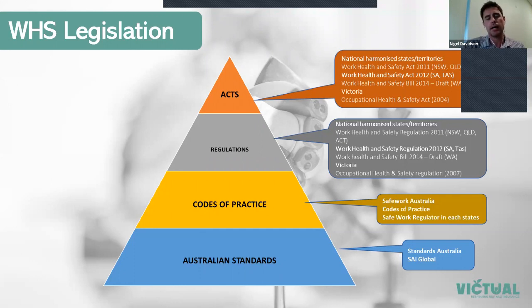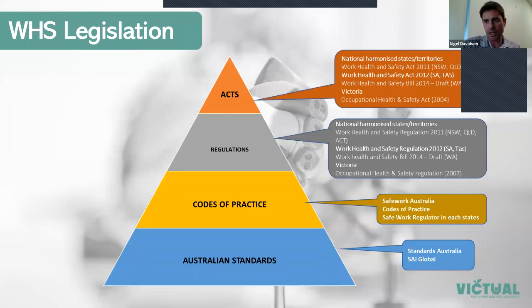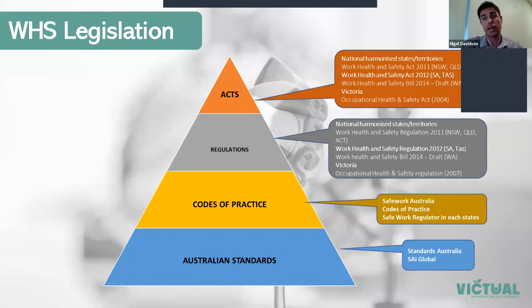Then you have Australian Standards, which are more technical documents — engineers will be well-versed in these — which can also help inform decisions around managing risk. To access these regulations, you can get them on the Safe Work Australia website, which is the government body that produces these documents. They're enforced by the different state regulators, who also put out information and work with industry.